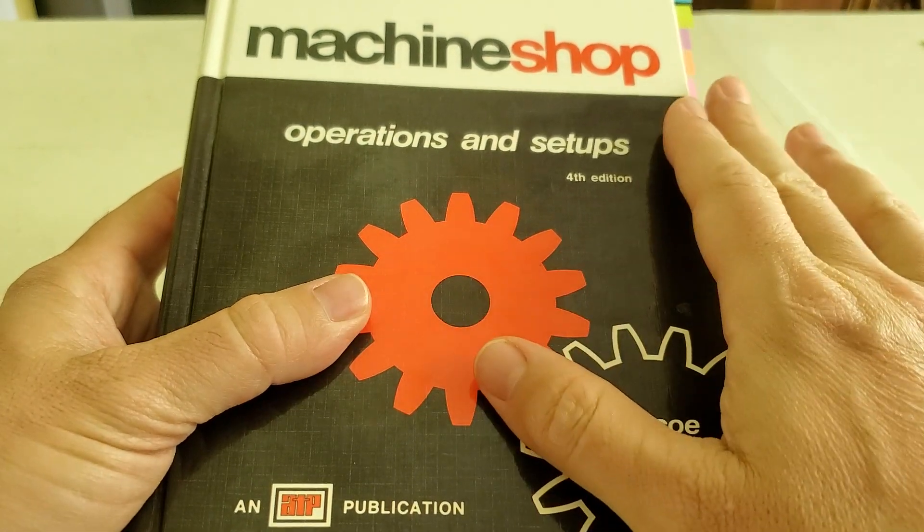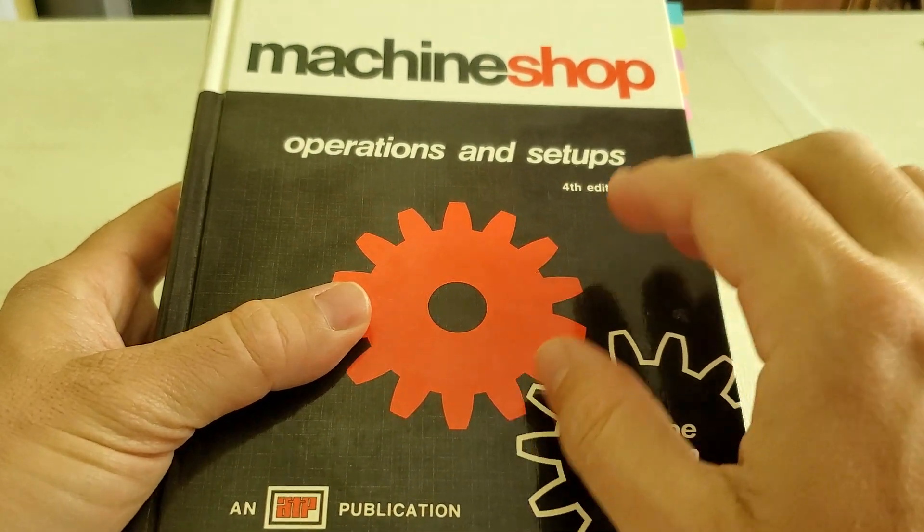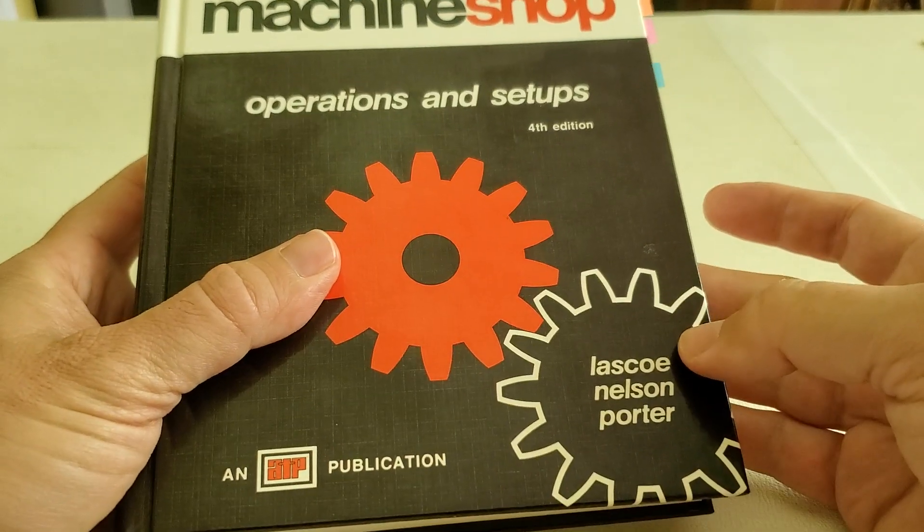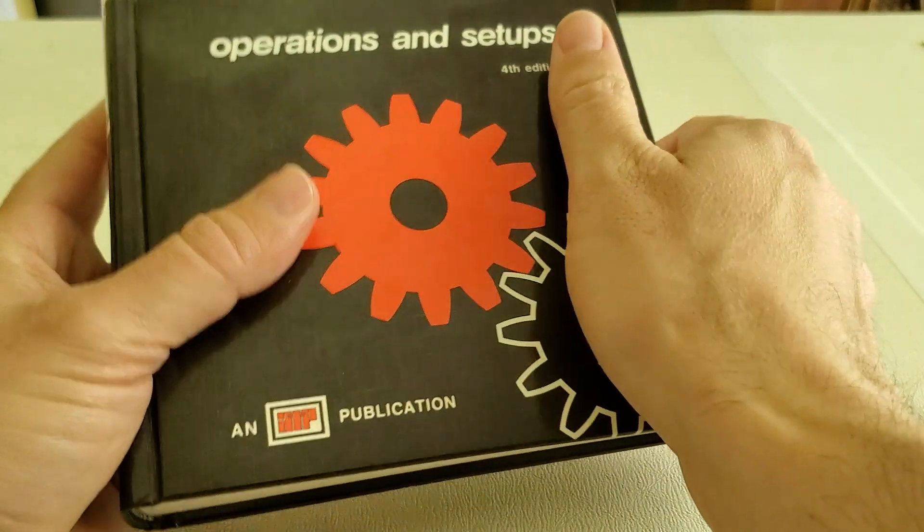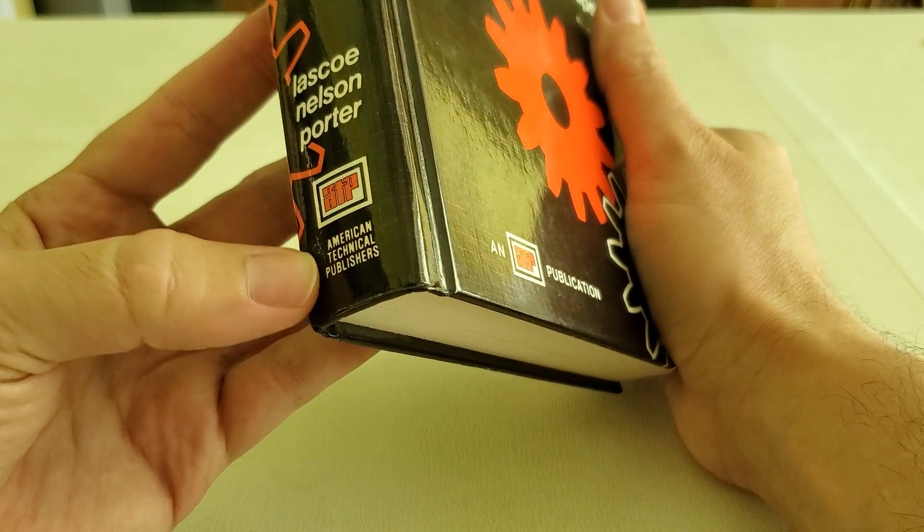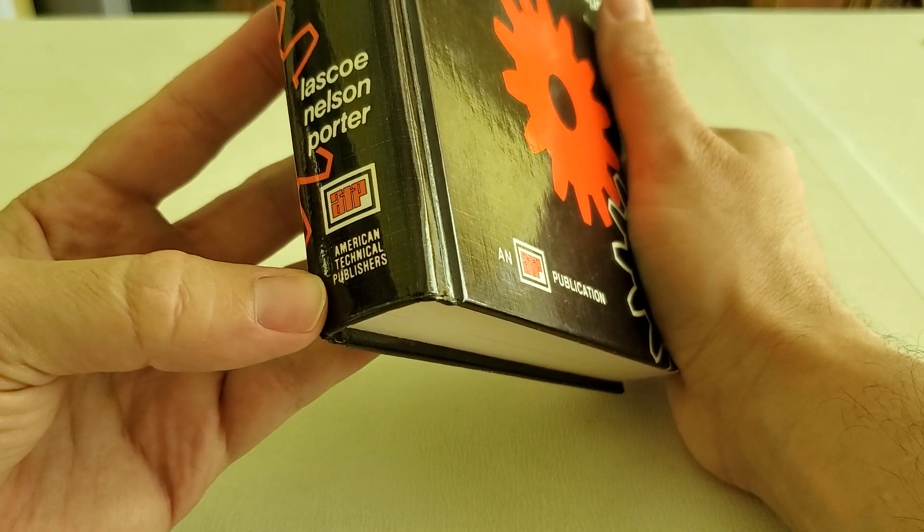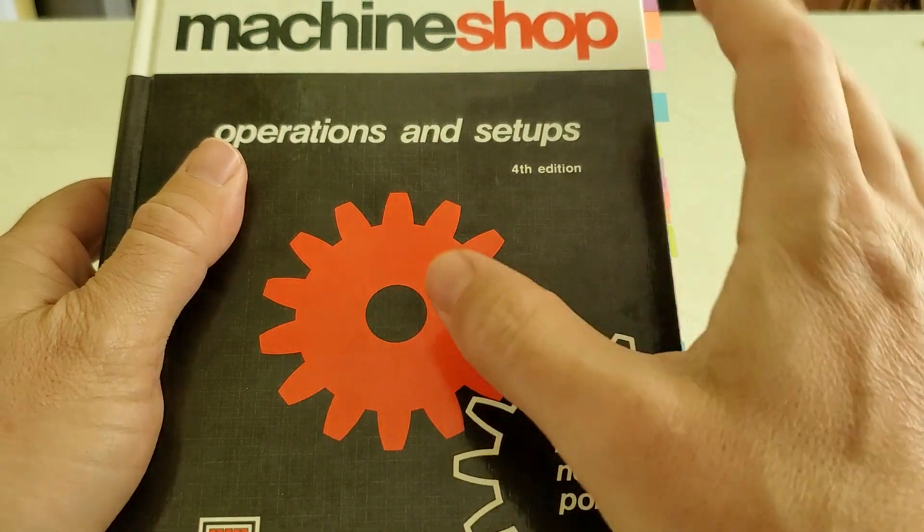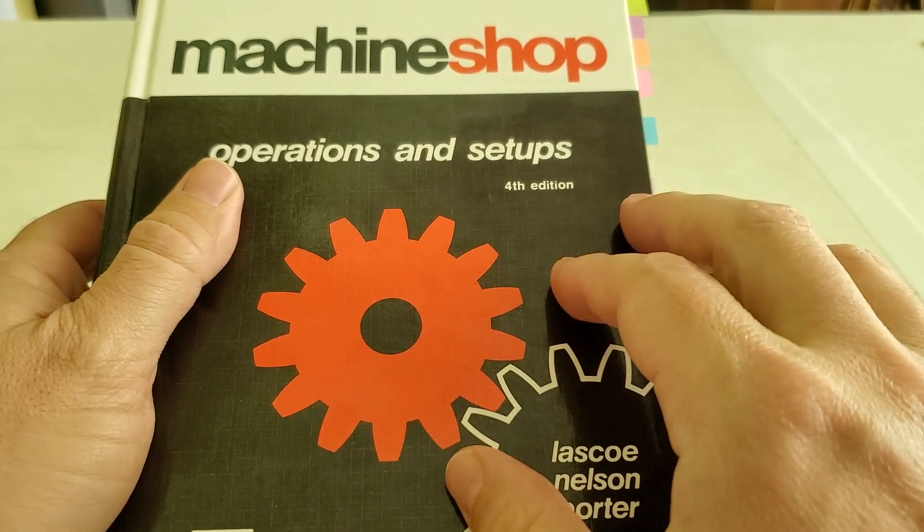So I'm giving you a little book review on one of my favorites, which is Machine Shop Operations and Setups by Lasko, Nelson and Porter. This is a machining textbook published by American Technical Publishers. It is still available, although it was last edited in 1973.